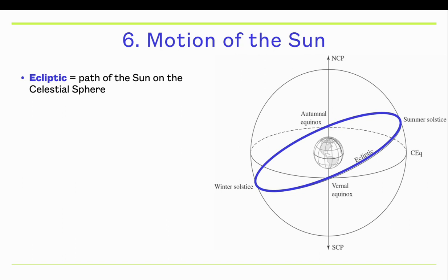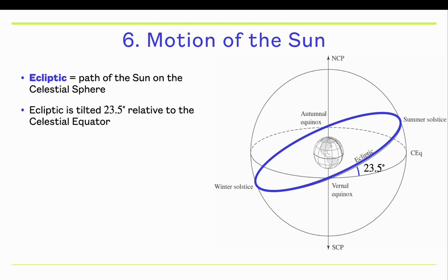Here's the celestial sphere again. We have the celestial equator, the north celestial pole, and the south celestial pole — that's tied to the Earth's rotation axis. The spin axis of the Earth is tilted 23.5 degrees compared to its orbital plane around the Sun, and so the relative path of the Sun on the sky is going to be tilted 23.5 degrees compared to the celestial equator.